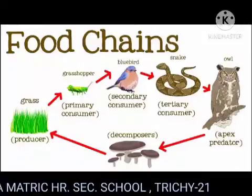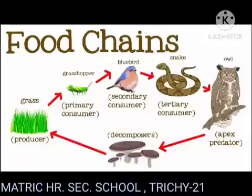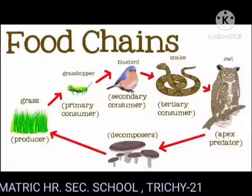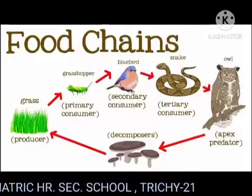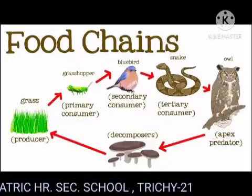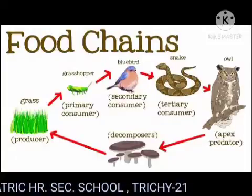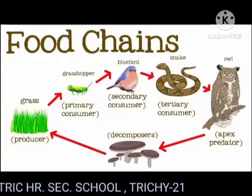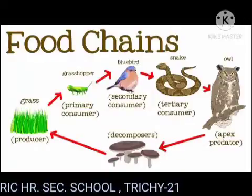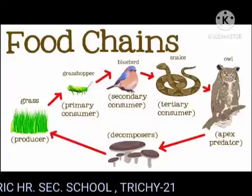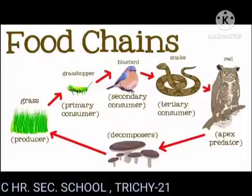It describes how organisms get energy and nutrients by eating other organisms. A food chain shows the relationship between producers, e.g. grass, and consumers, e.g. deer, goat, cow, and tiger.